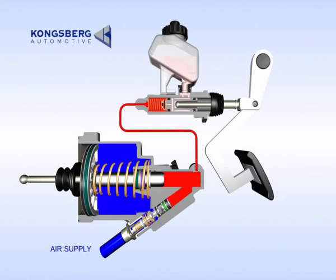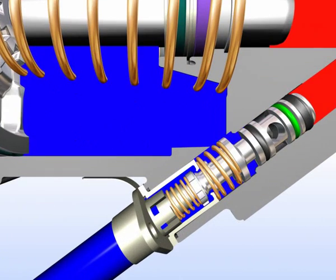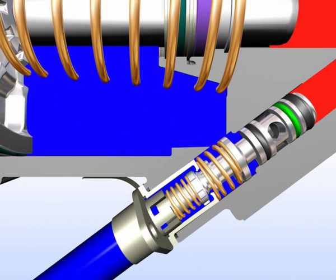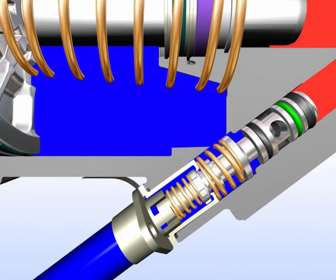When the clutch pedal is released and the hydraulic pressure decreases, the spool moves away from the air valve, which then closes the compressed air inlet.